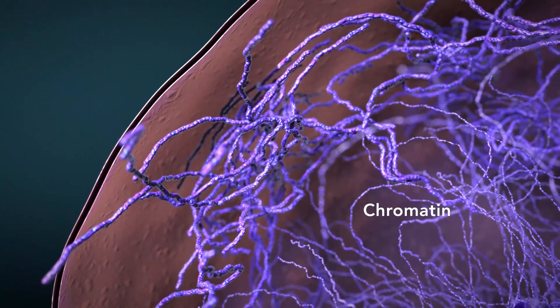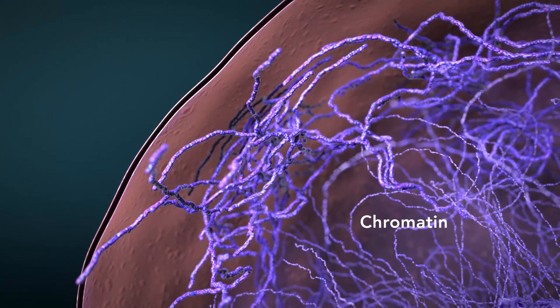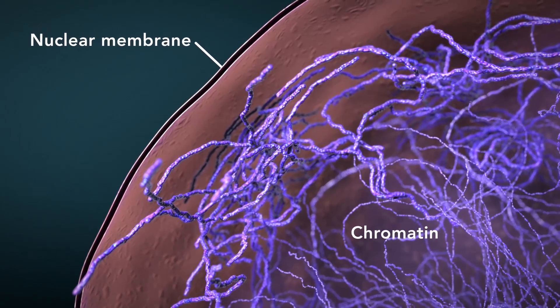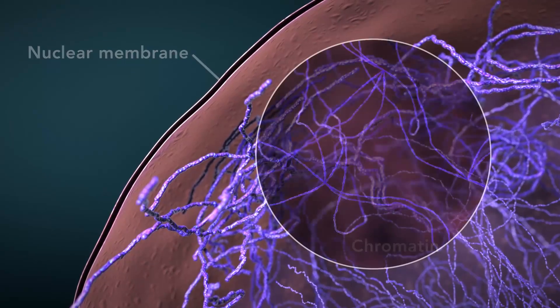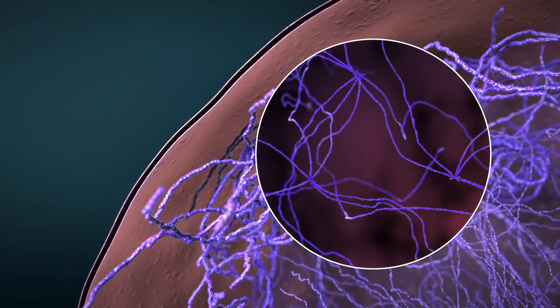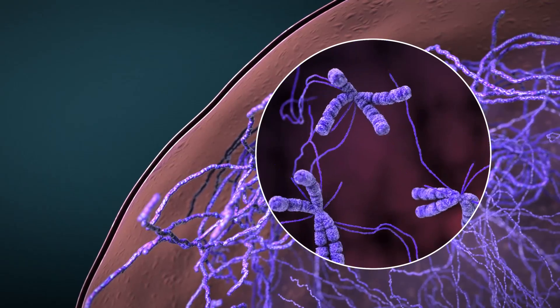Chromatin is the tangled, spread-out form of DNA found inside the nuclear membrane. When a cell is ready to divide, DNA condenses into structures known as chromosomes.